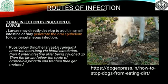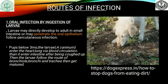The first route of infection is oral infection, which occurs by ingestion of the larvae. The larvae may directly develop into adults in the small intestine, causing lesions like enteritis or hemorrhagic enteritis. Alternatively, the larvae can penetrate the oral epithelium and follow the percutaneous route of infection.